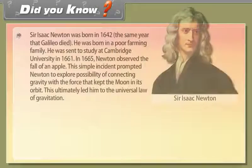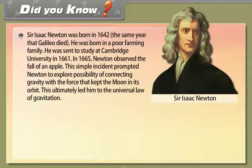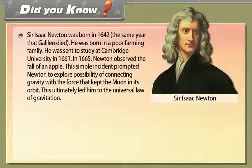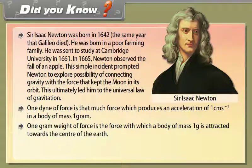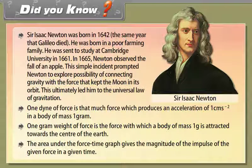Did you know? Sir Isaac Newton was born in 1642, the same year Galileo died. He was born in a poor farming family and was sent to study at Cambridge University in 1661. In 1665, Newton observed the fall of an apple, which prompted him to explore the connection between gravity and the force keeping the moon in orbit, ultimately leading to the universal law of gravitation. One dyne of force produces an acceleration of 1 cm/s² in a body of mass 1 gram. The area under the force-time graph gives the magnitude of impulse.